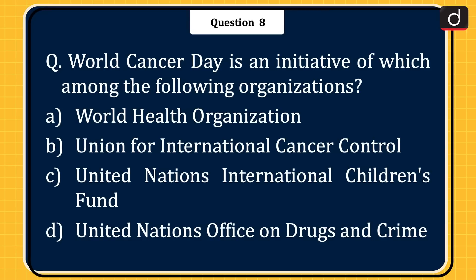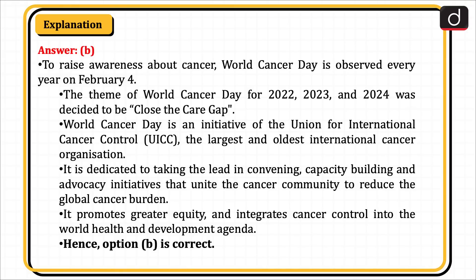Next question: World Cancer Day is an initiative of which among the following organizations? Options: World Health Organization, Union for International Cancer Control, United Nations International Children's Fund, or United Nations Office on Drugs and Crime? The correct answer is option B, Union for International Cancer Control. To raise awareness about cancer, World Cancer Day is observed every year on February 4. The theme for 2022, 2023, and 2024 was decided to be 'Close the Care Gap.' World Cancer Day is an initiative of the UICC, the largest and oldest international cancer organization, dedicated to convening, capacity building, and advocacy to reduce the global cancer burden. Hence, option B is correct.